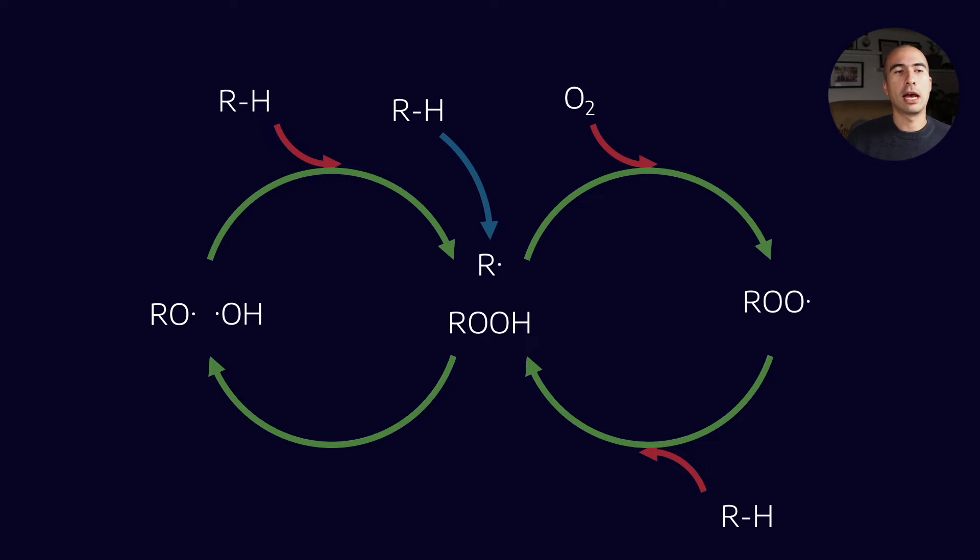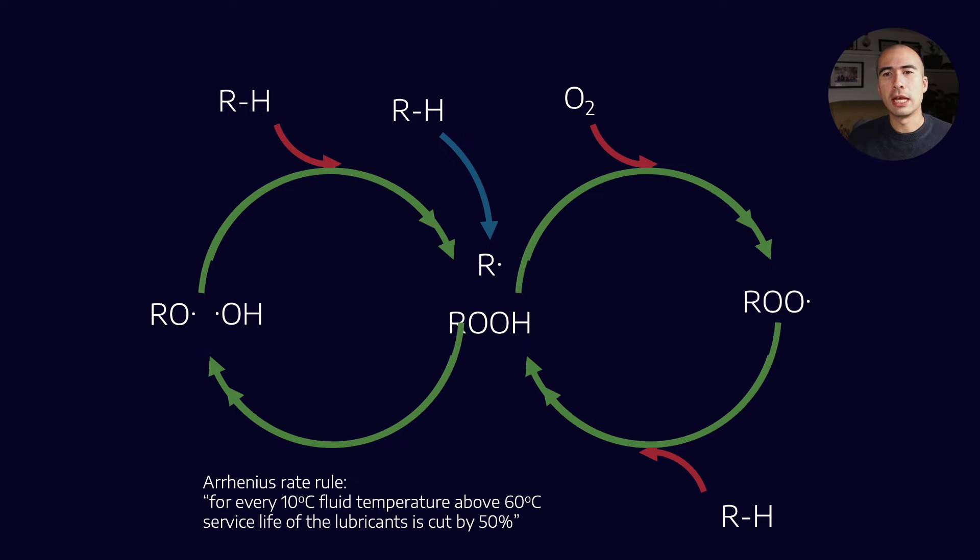Oxidation, on the other hand, happens in an oxygen-rich environment, which is most environments, because in your reservoir you'll have a headspace with air in it, and air has oxygen. Really, stopping oxidation is more about slowing down this oxidation cycle. This is a cycle that is continuing to happen and we can't stop it, we can just slow down the growth of free radicals.